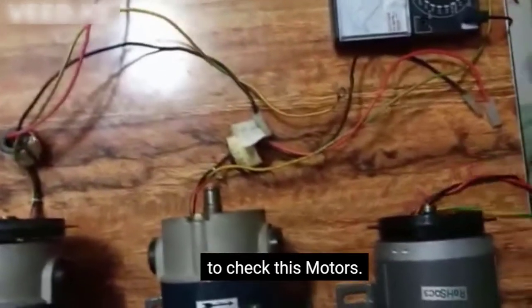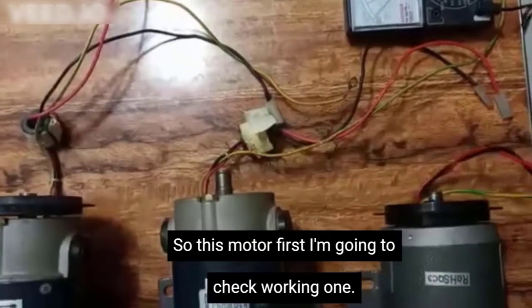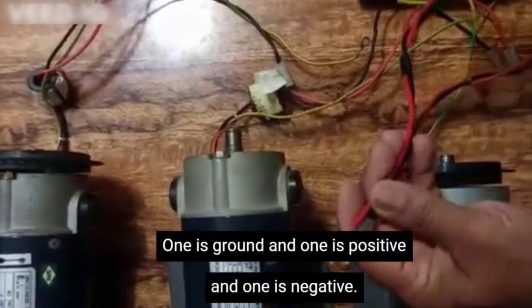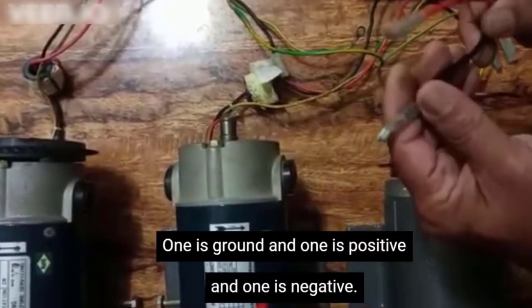We are going to check one by one, and I will tell you how to check these motors. So this motor, first I am going to check the working one. As you can see, there are three wires: one is ground, one is positive, and one is negative.